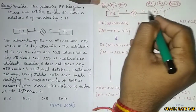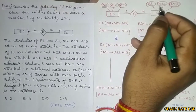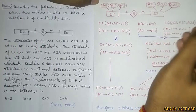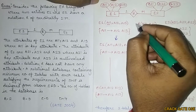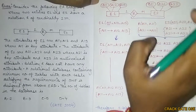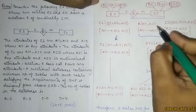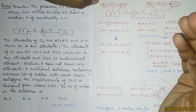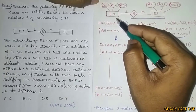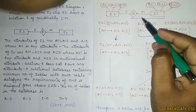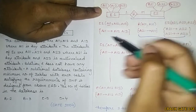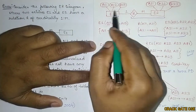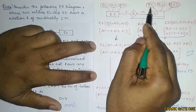Let's check the solution. After drawing the ER diagram we can see a multi-valued attribute, which is new. For a one-to-many relationship we already know we can merge R into the many side. Before decomposition there will be three tables — one for E1, one for R, one for E2. In E1, A11 is the key, so A11 defines A12 and A13.